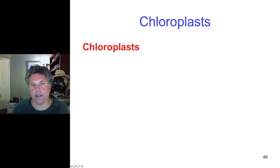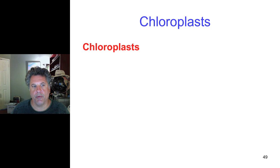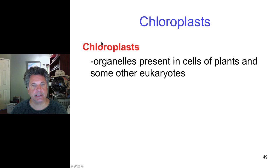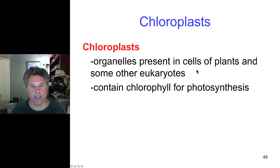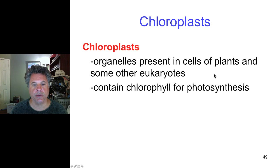Now we can talk about the chloroplasts, the organelles inside eukaryotic cells that provide the machinery and the scaffolding for photosynthesis to take place. Chloroplasts are present in plants and some other eukaryotes — algae and some protists also have chloroplasts. They contain the photosynthetic pigment chlorophyll, a green pigment molecule that captures light energy for photosynthesis, and chlorophyll is why plants are green.